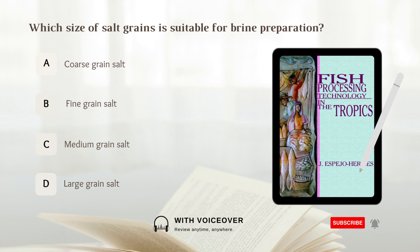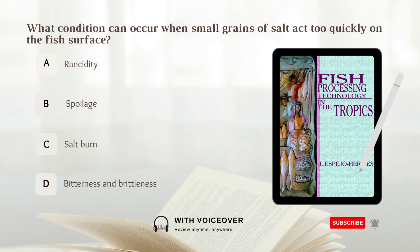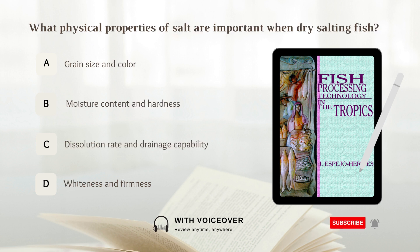Which size of salt grains is suitable for brine preparation? A. Coarse grain salt. B. Fine grain salt. C. Medium grain salt. D. Large grain salt. Answer: B. Fine grain salt. What condition can occur when small grains of salt act too quickly on the fish surface? Answer: C. Salt burn.